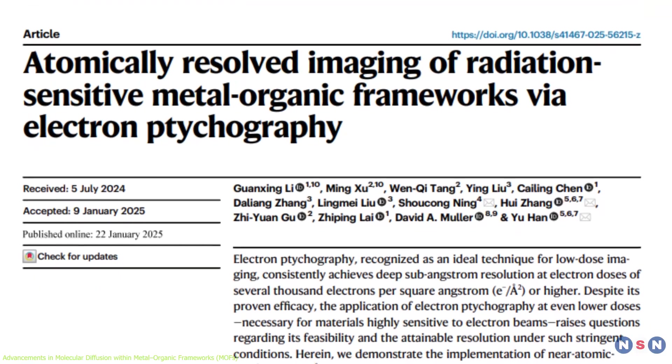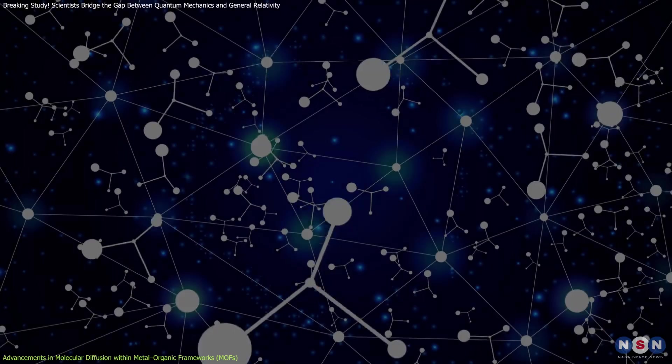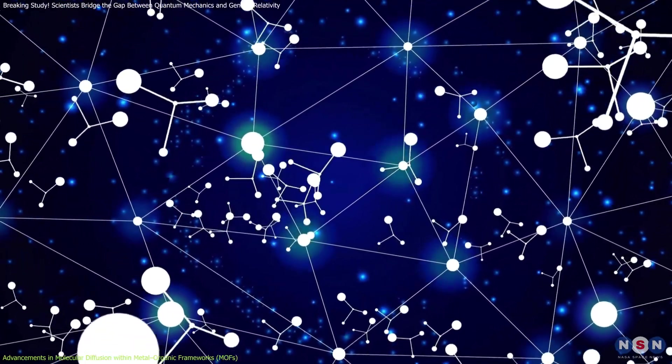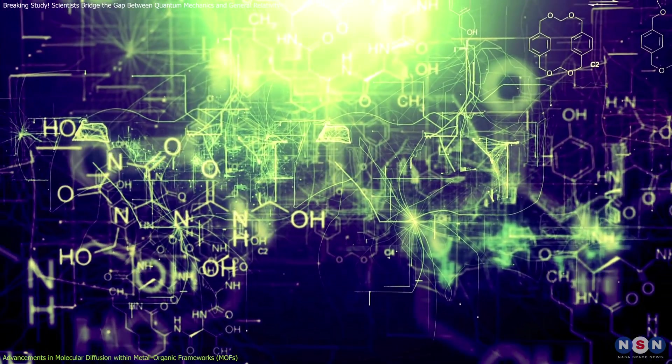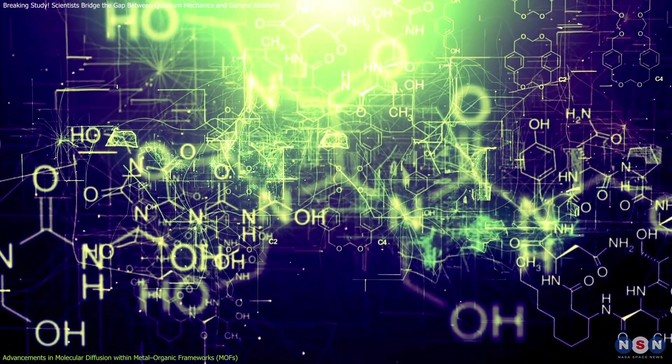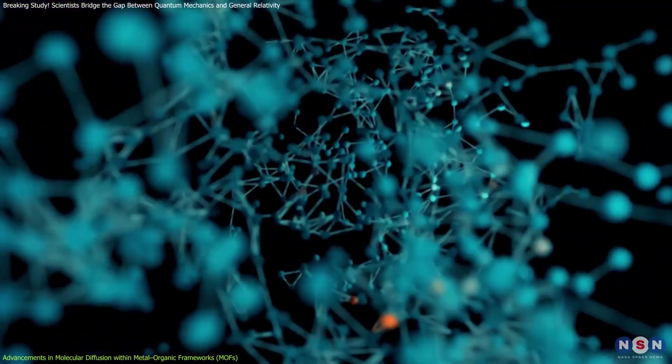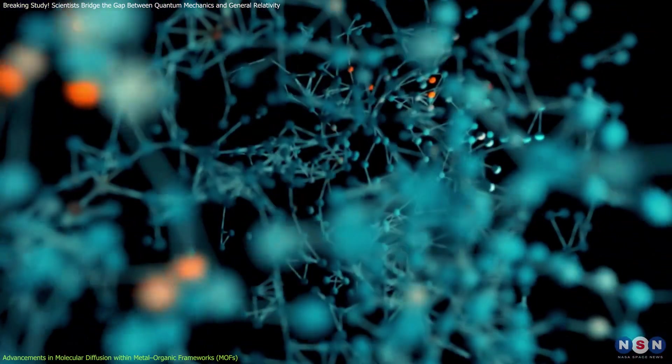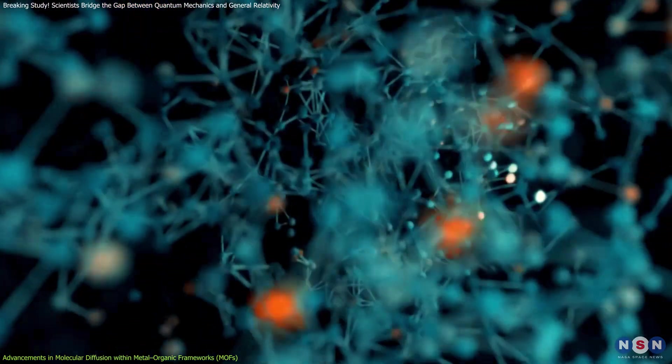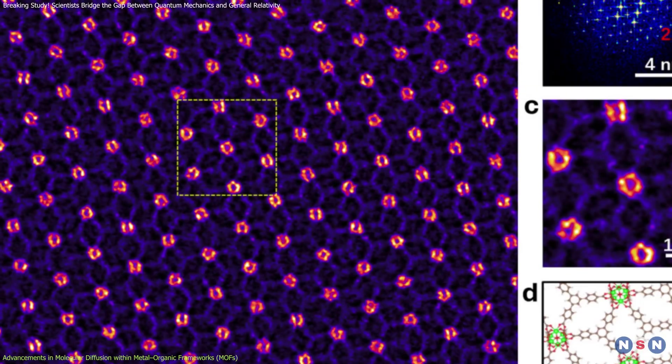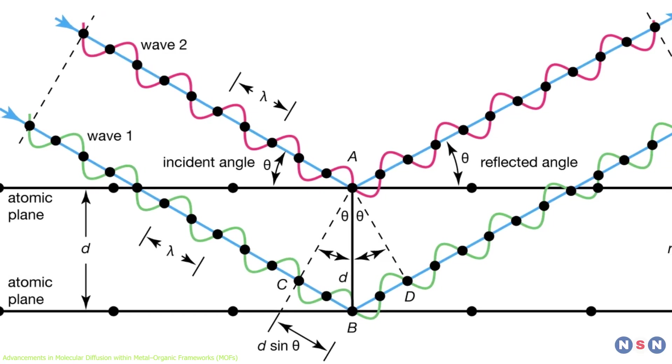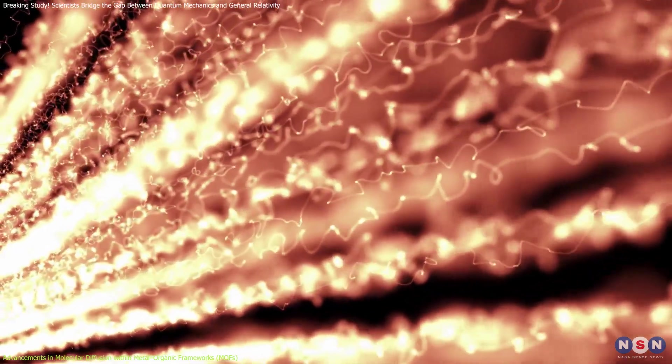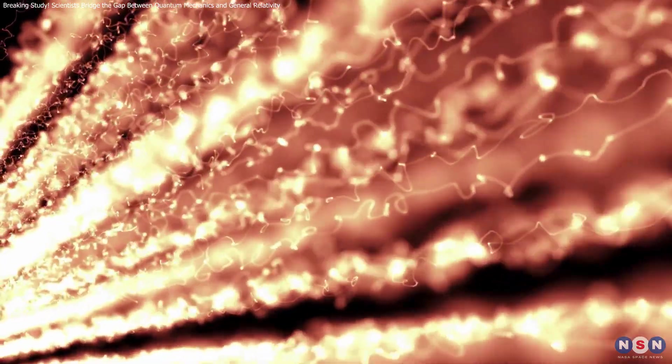What makes this study particularly remarkable is the team's ability to reverse the natural diffusion selectivity of the isomers. By manipulating the chemical interactions between the isomers and the MOF framework, the researchers demonstrated how molecular pathways can be controlled dynamically at the atomic scale. Structural validation through advanced imaging techniques, such as X-ray diffraction and electron microscopy, confirmed the precision of their design.